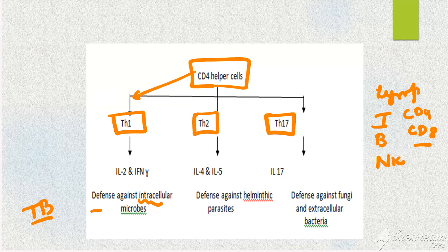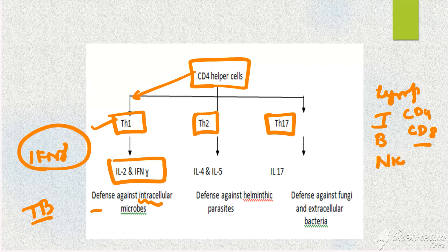They are converted to T helper 1 cells because only then you will produce interferon gamma. Does anyone remember the main role of interferon gamma? It's the most important cytokine in the mechanism of granuloma formation.